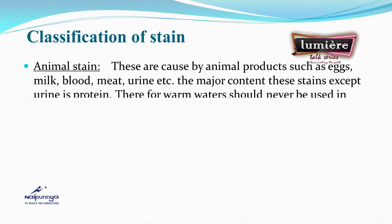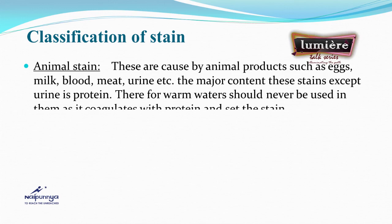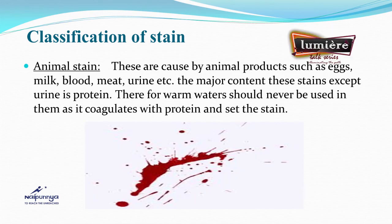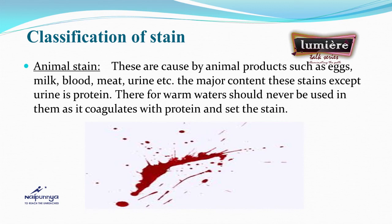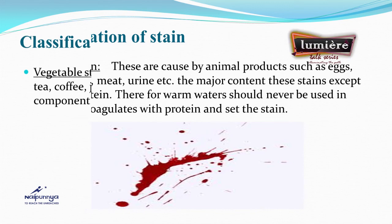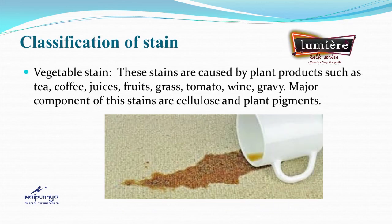Therefore, warm water should never be used on animal stains — it coagulates the protein and sets the stain. Vegetable stains are caused by plant products such as tea, coffee, juices, fruit, grass, tomato, gravy, wine, and so on.